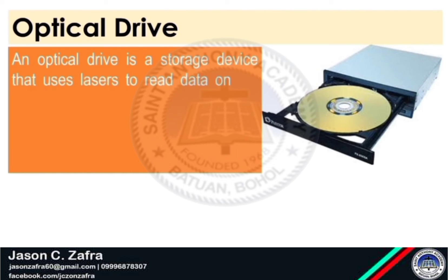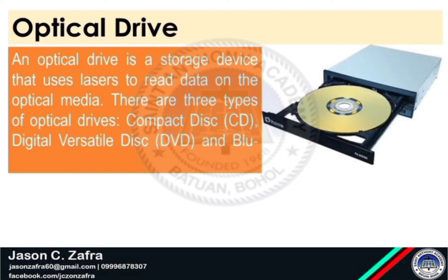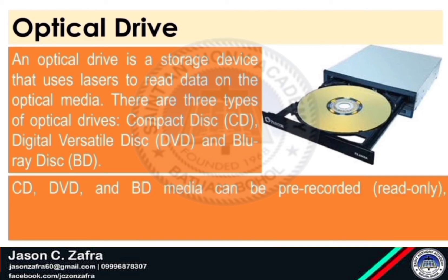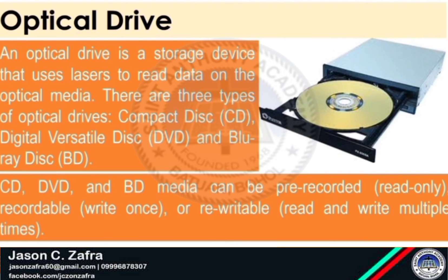Next is we have optical drive. An optical drive is a storage device that uses lasers to read data on the optical media. There are three types of optical drives: compact disc or CD, digital versatile disc or DVD, and Blu-ray disc or BD. CD, DVD, and BD media can be pre-recorded or read-only, recordable or write-once, or re-writable or read and write multiple times.